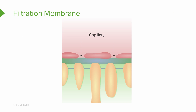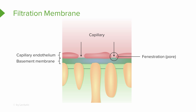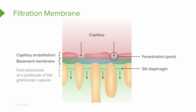To recap using a diagram: plasma in the glomerular capillaries is filtered through the fenestrations of the capillary endothelia, then through the basement membrane of the capillary as well as the glomerular capsule, and finally through the slit diaphragms of the podocytes of the glomerular capsule wall. From there, the filtrate goes into the capsular space.